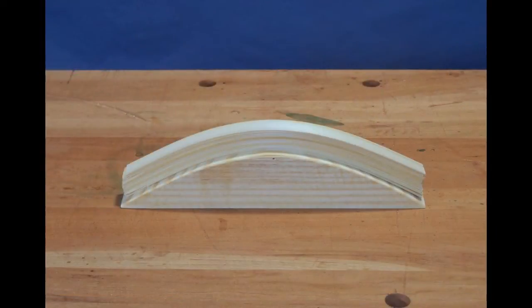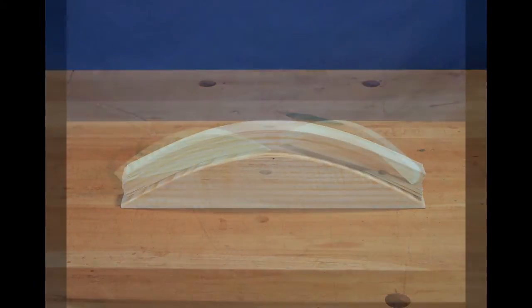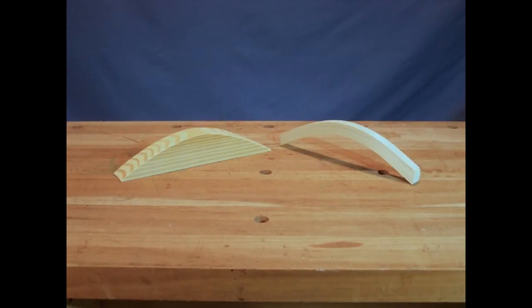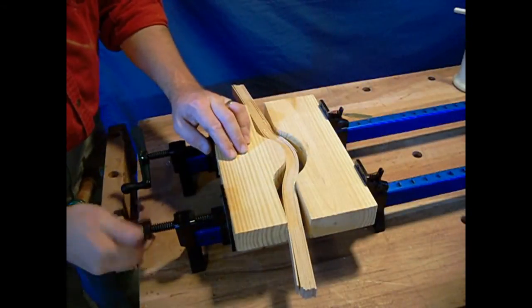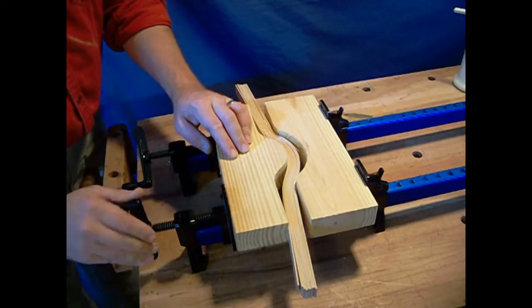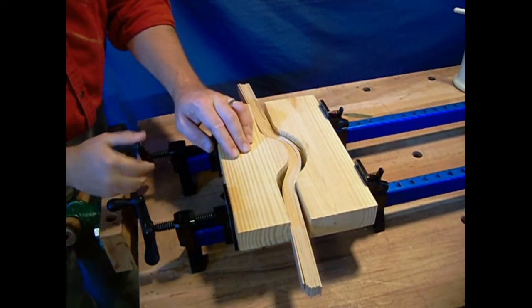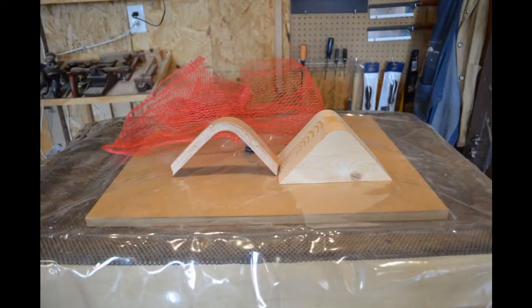I've explored the process of making bentwood parts out of thin laminations in previous videos by clamping the laminations between a pair of forms or by clamping them around a single form. Using a vacuum press to clamp your parts is a third and often better option that you should look into.